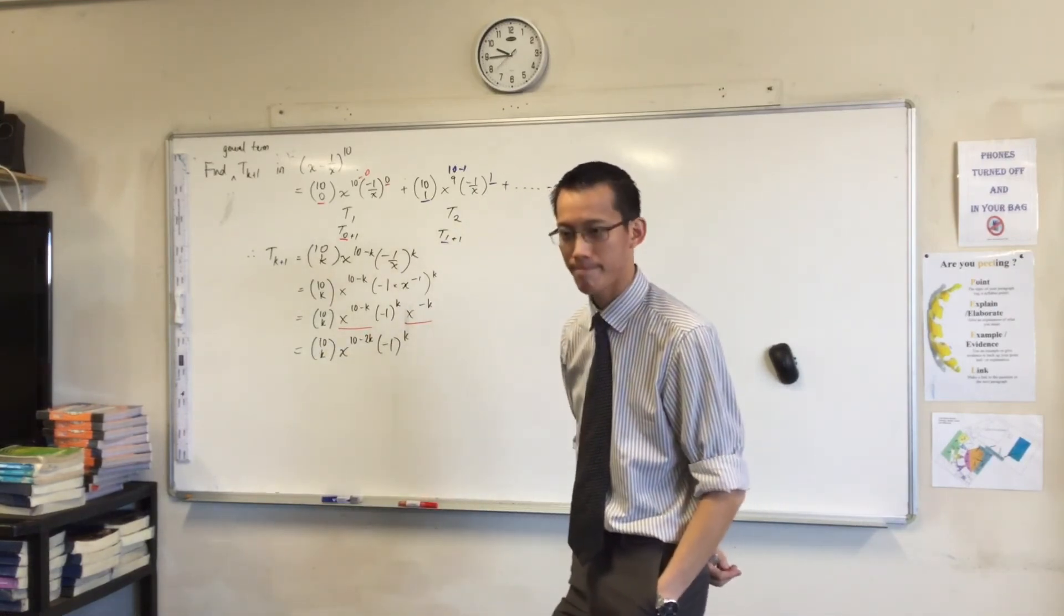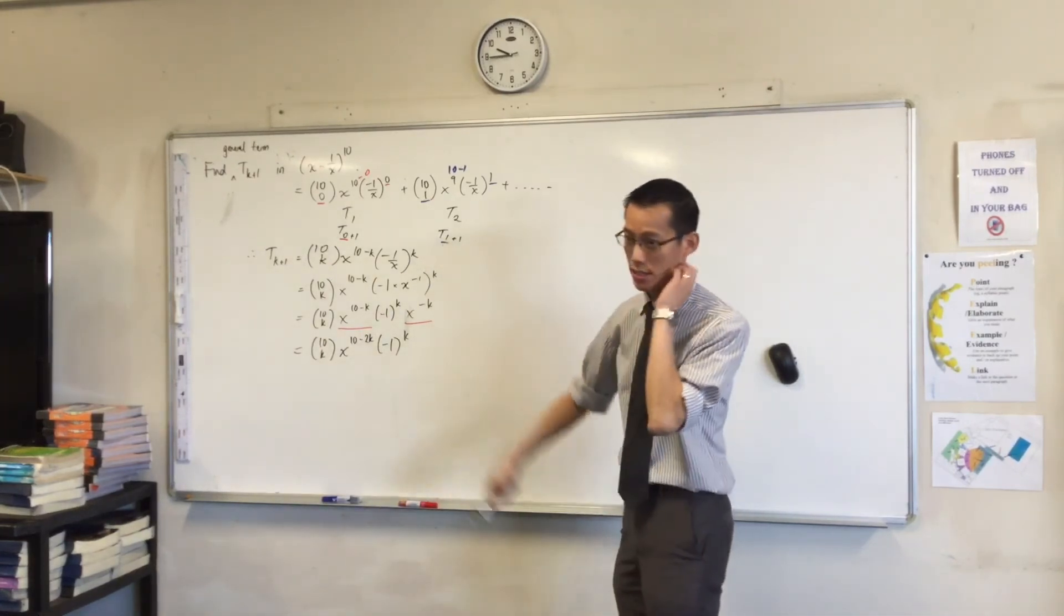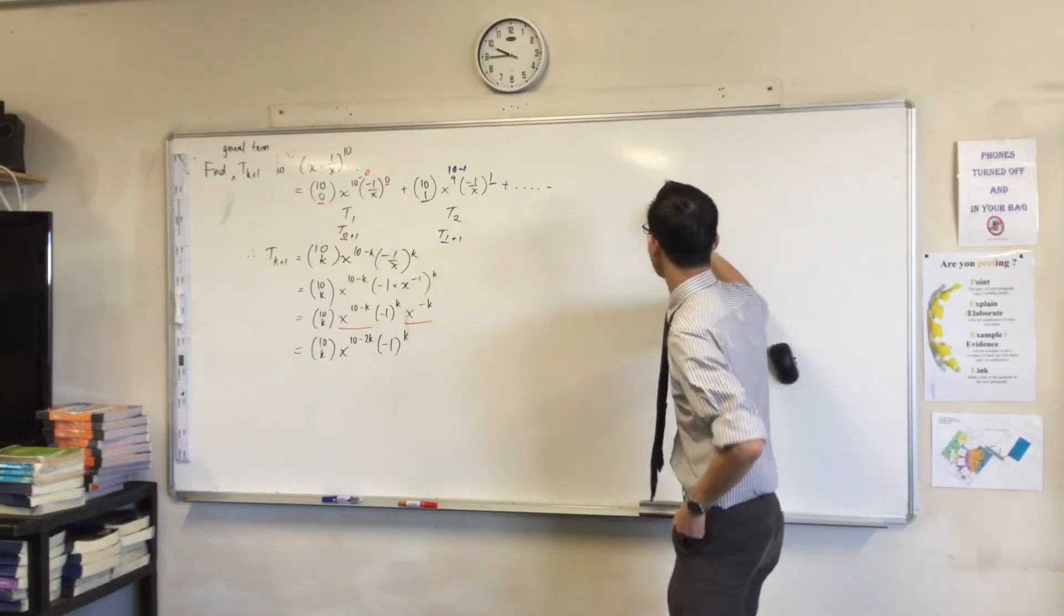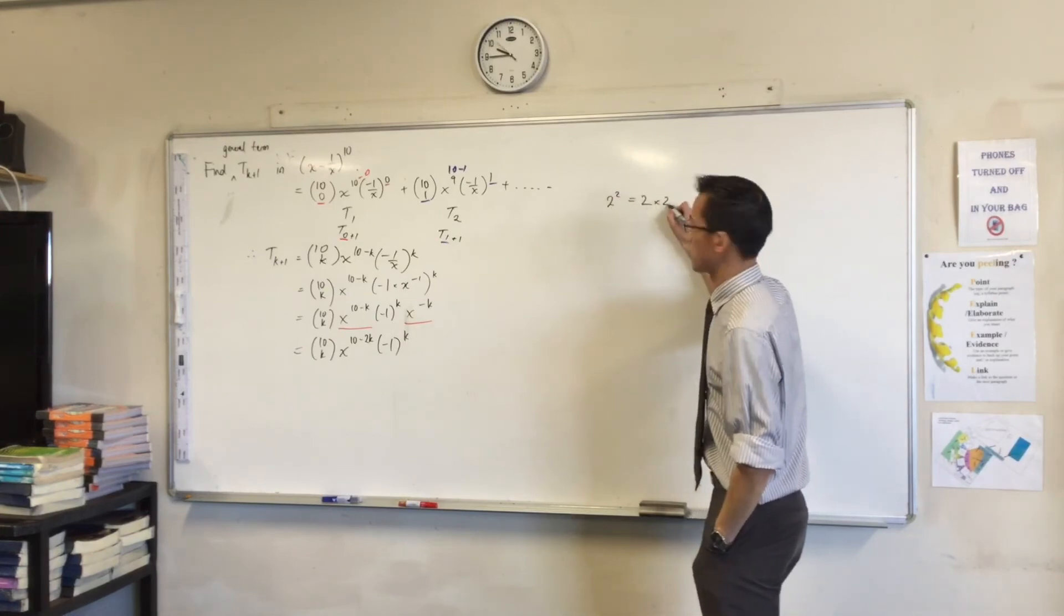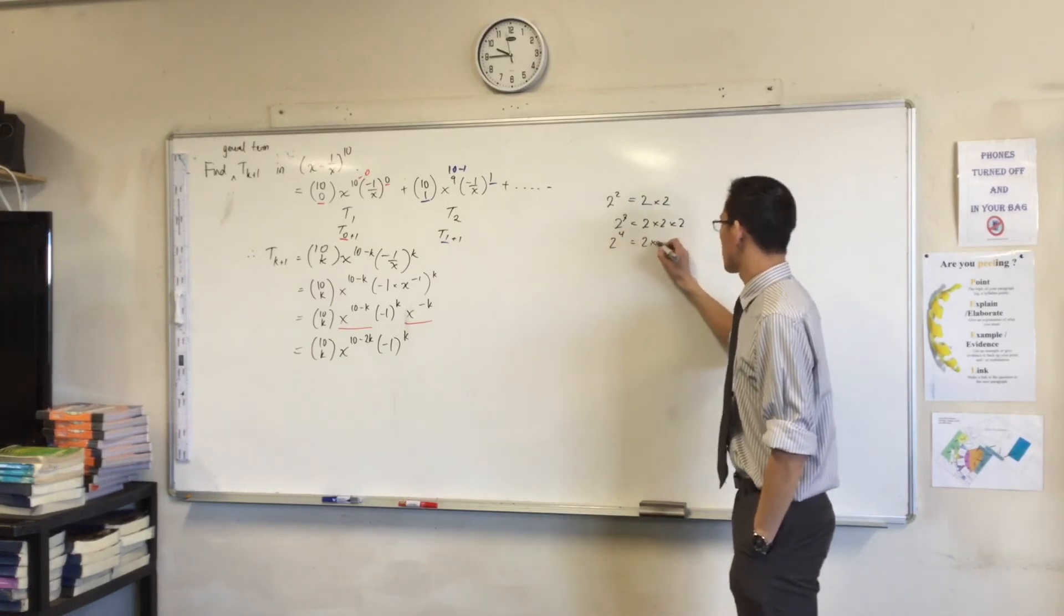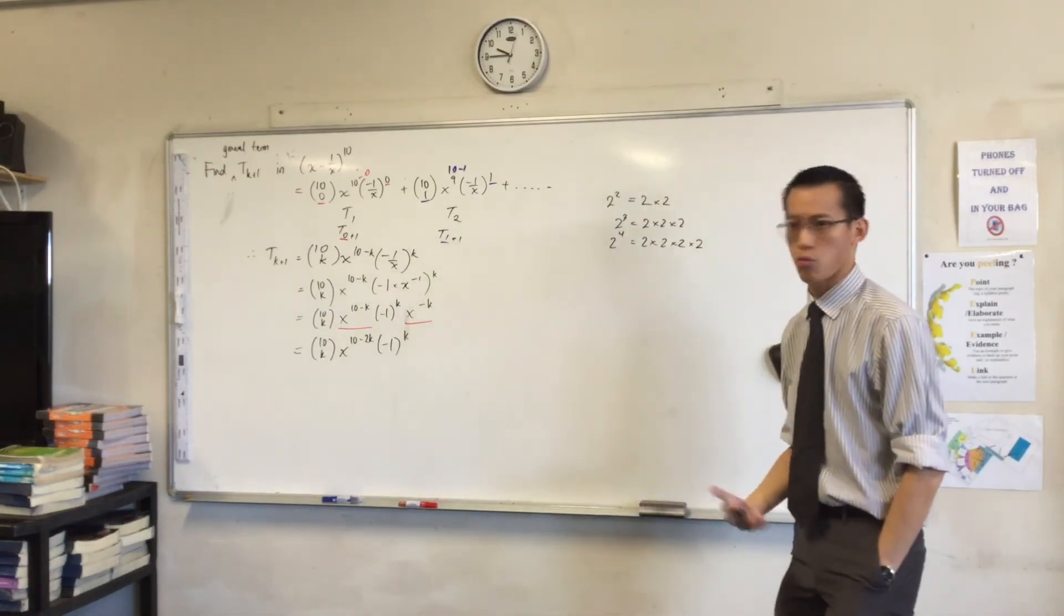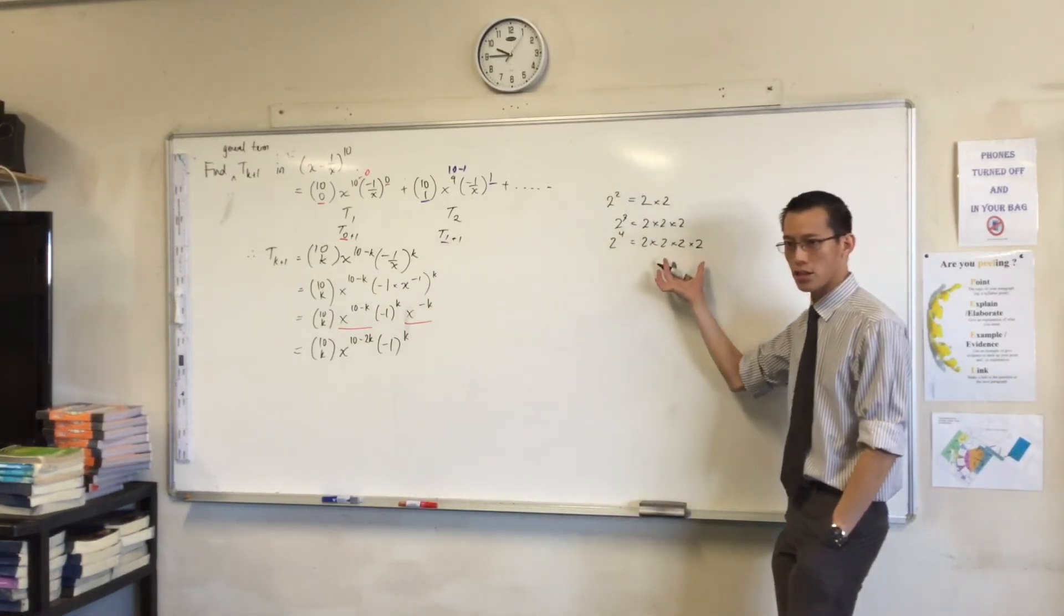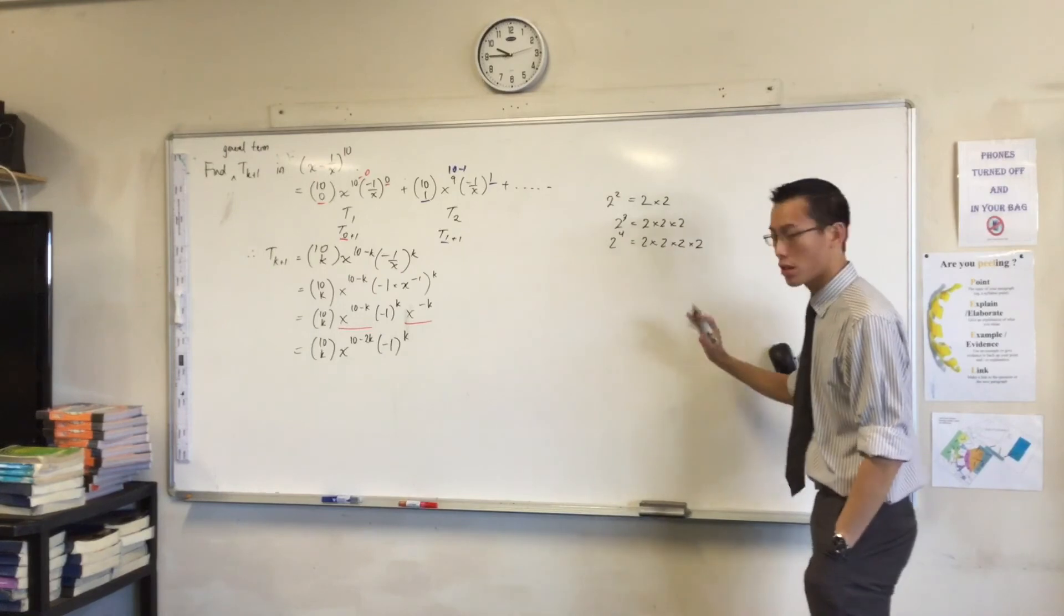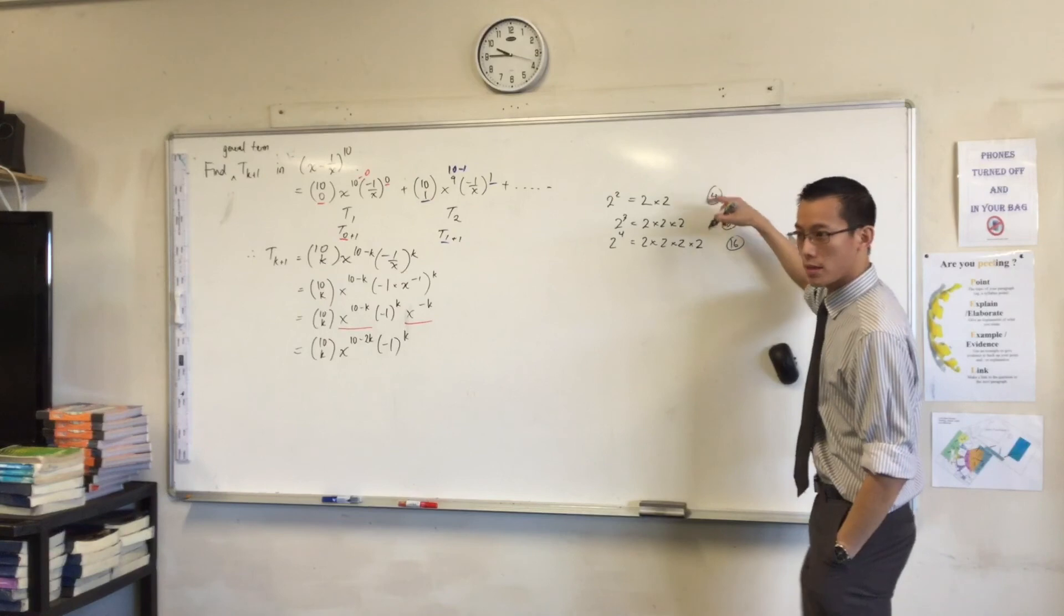Would you say it's a general rule when you have a fraction to flip it around? Yeah, so negative indices, the reason why we do this is because if you think about the way indices started, they start like this.